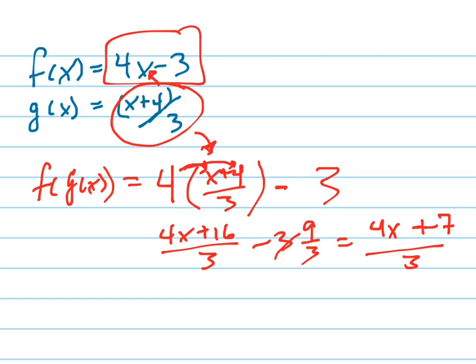So 4x plus 7 over 3. You could rewrite that as 4 thirds x plus 7 thirds.